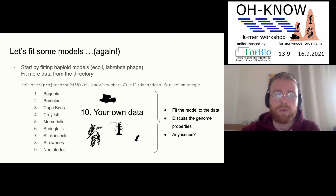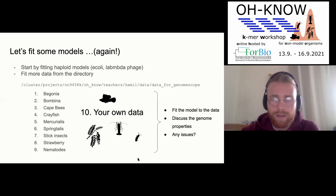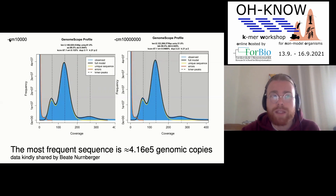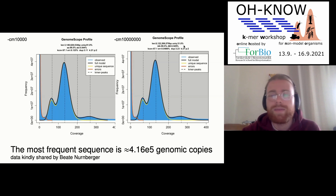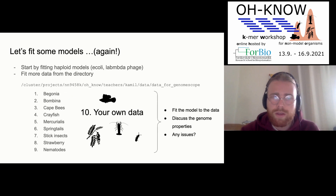Now let's start where we left off last time working with k-mer spectra. You will again have eight breakout rooms. The crayfish and Bombina data are available so you can fit those k-mer spectra. Note that CIM refers to the maximum k-mer count discounted — that's the parameter as specified for KMC.